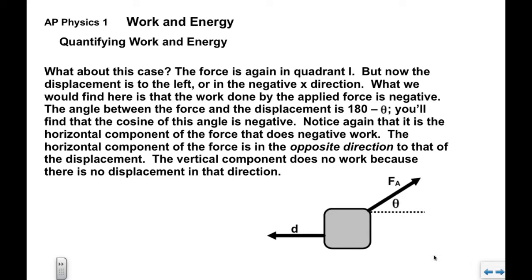Here we have another case. We have the applied force to the right and up, but the object is moving to the left, or the displacement is to the left in the negative x direction. What we find here is that the work done by this applied force is actually negative. The angle between the force and the displacement is 180 minus theta. You'll find that the cosine of this angle would be negative. So in this case, the horizontal component or the x component of this applied force does negative work. The horizontal component of the force points to the right and the displacement is to the left.